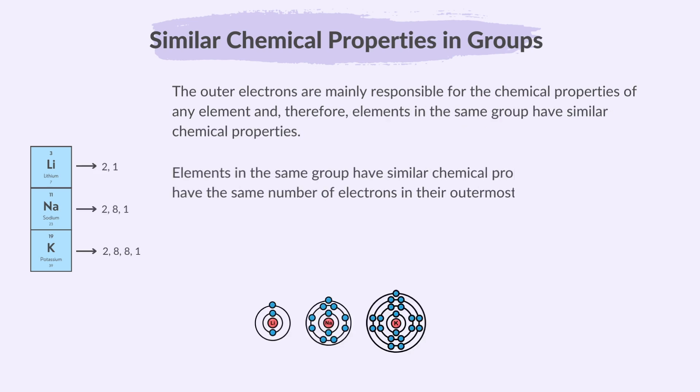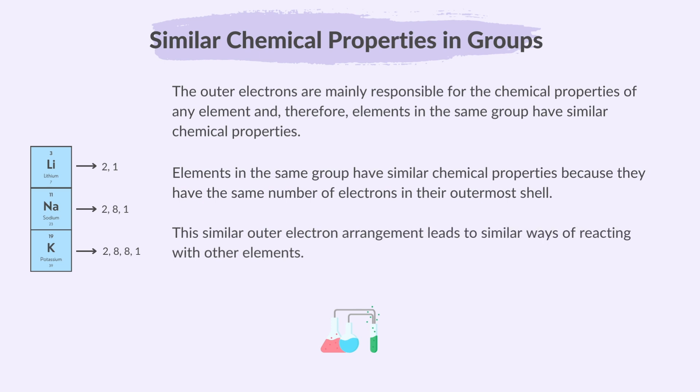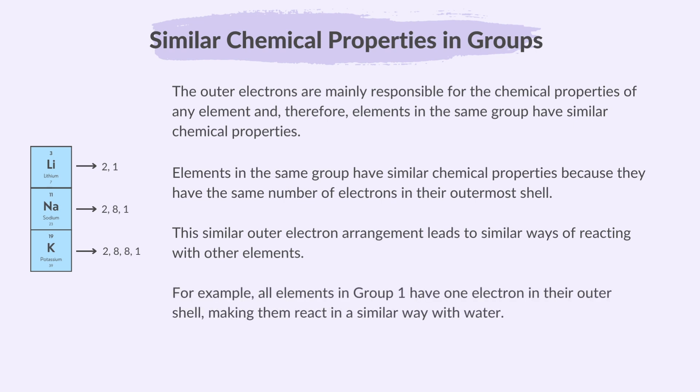This is because they have the same number of electrons in their outermost shell. This similar outer electron arrangement leads to similar ways of reacting with other elements. This is because in a reaction it is the outermost electrons that participate in the chemical reaction. For example, all elements in group 1 have one electron in their outer shell making them react in a similar way with water.